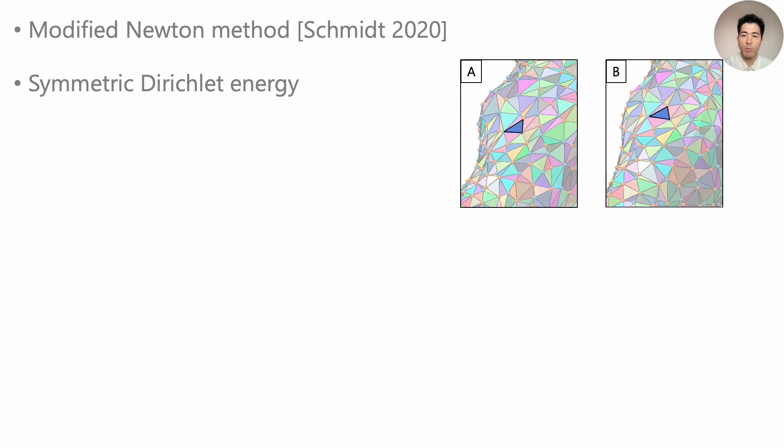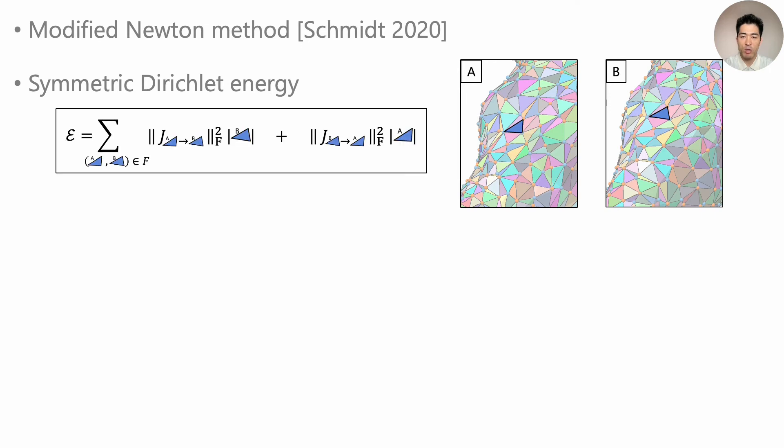This can be trivially computed once we have a CIT. For each intrinsic face, we know its 2D triangle shape on A and B. So we get a 2 by 2 Jacobian matrix mapping one triangle to the other in some 2D coordinate frame. We just add up its Frobenius norm squared, weighted by the triangle area.